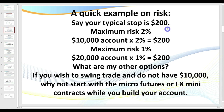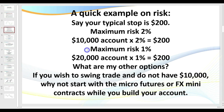Let's say you're swing trading and you have a stop loss of $200. If you're trading the micro ES where it's $1.25 a tick, that means you've got a 160-tick stop — which is a 40-point stop, and that's massive. It's very unlikely you'll have stops anywhere near that when trading the micros, but a maximum two percent risk would dictate that you need at least a $10,000 account. As you progress, we want to lower our risk to one percent, which would mean needing a $20,000 account.